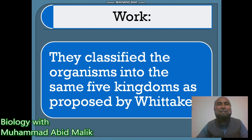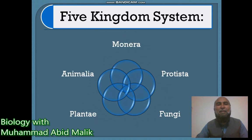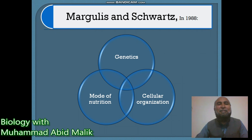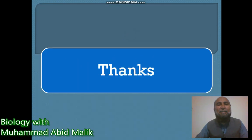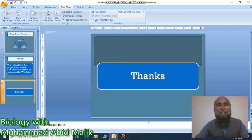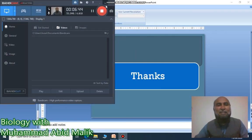In the next lesson, we will try to understand about the Five Kingdom classifications. The five kingdoms — Monera, Protista, Fungi, Plantae, and Animalia — will be our next lesson. I am really thankful to you for listening to my video. If you feel that the videos and lessons are good, then please subscribe to my channel and recommend it to your friends. Thank you very much. See you in the next lesson.